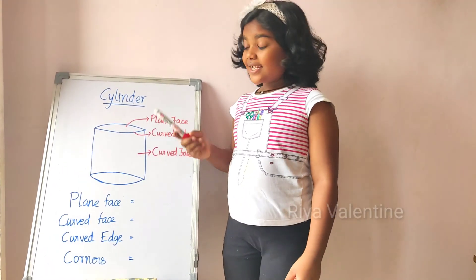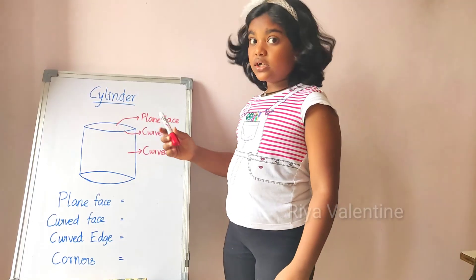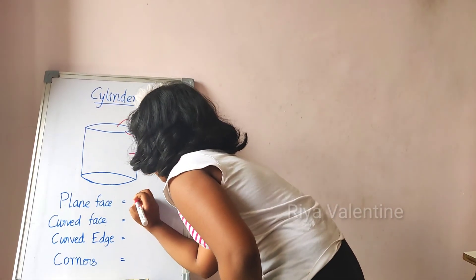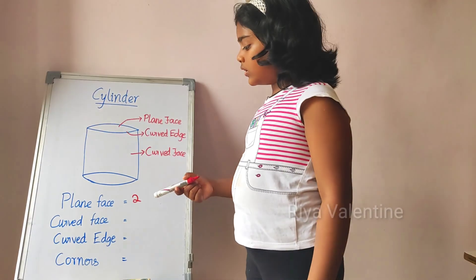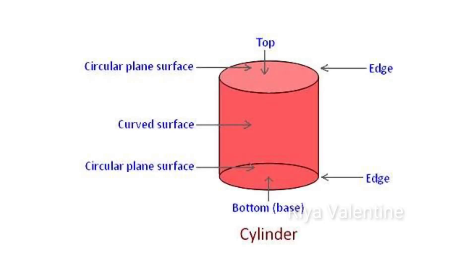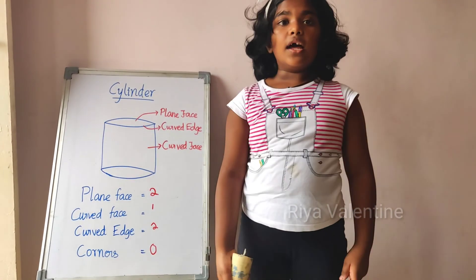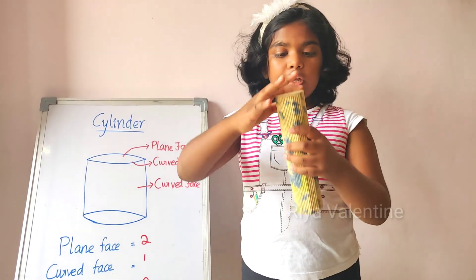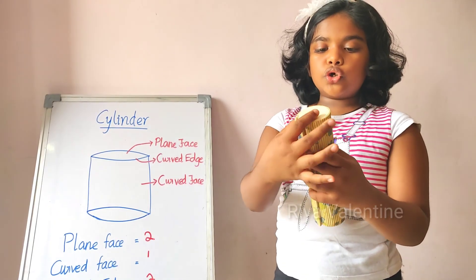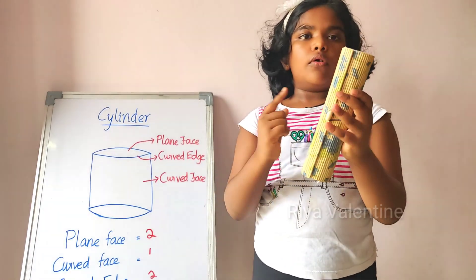So let's move on to the cylinder. The cylinder has two plane faces, two curved edges, and one curved face. Do you see any corners here? No. One, two plane faces, one curved face, two curved edges, and zero corners. An example for the cylinder is a pouch — this cylinder pouch has two plane faces and two curved edges and one curved face.